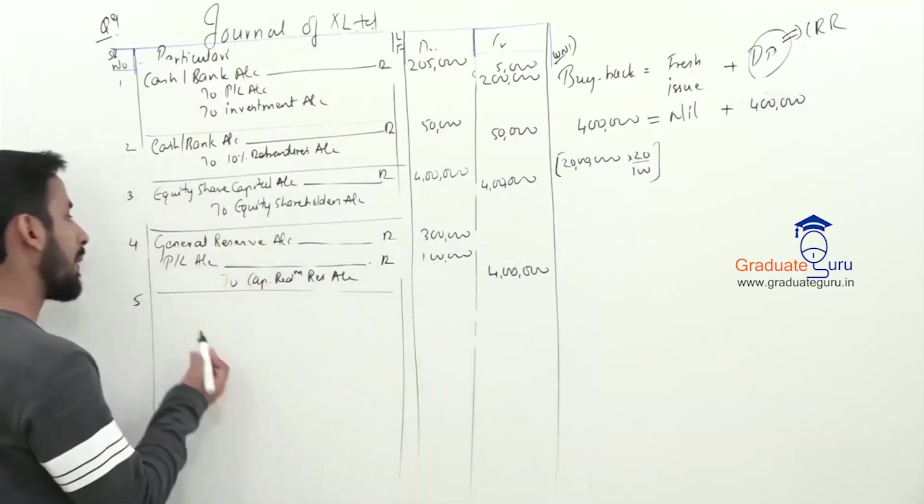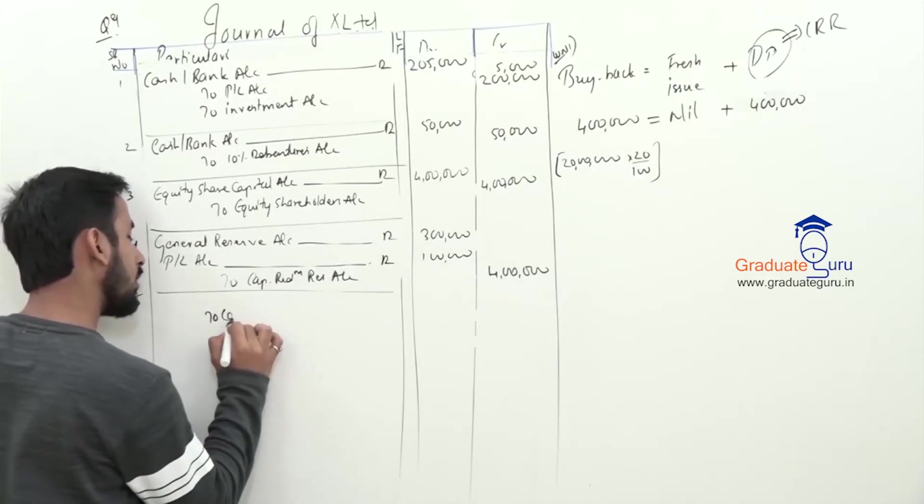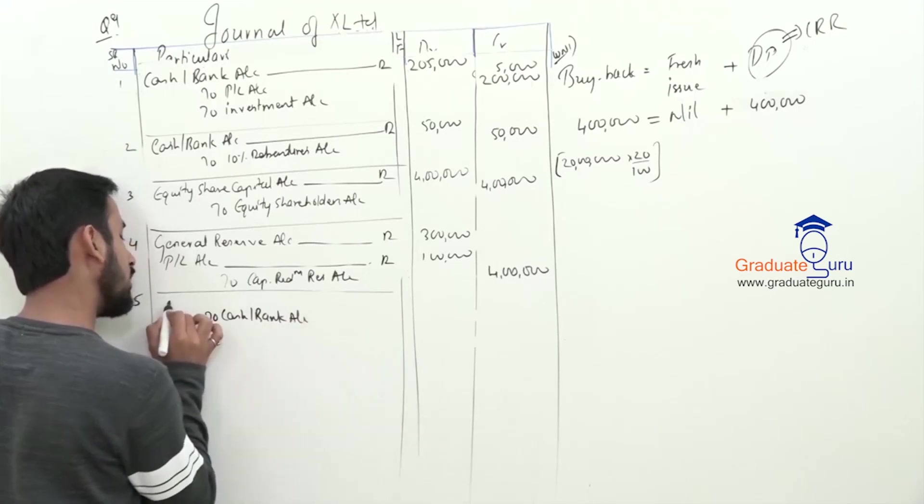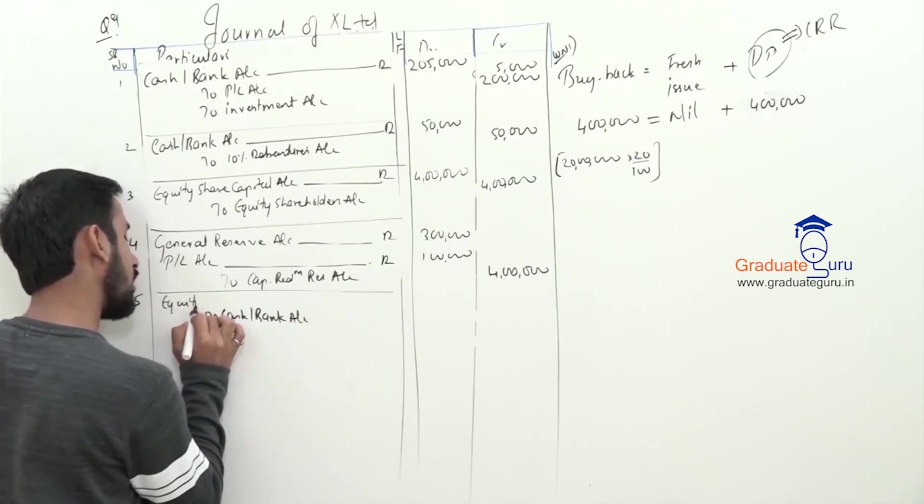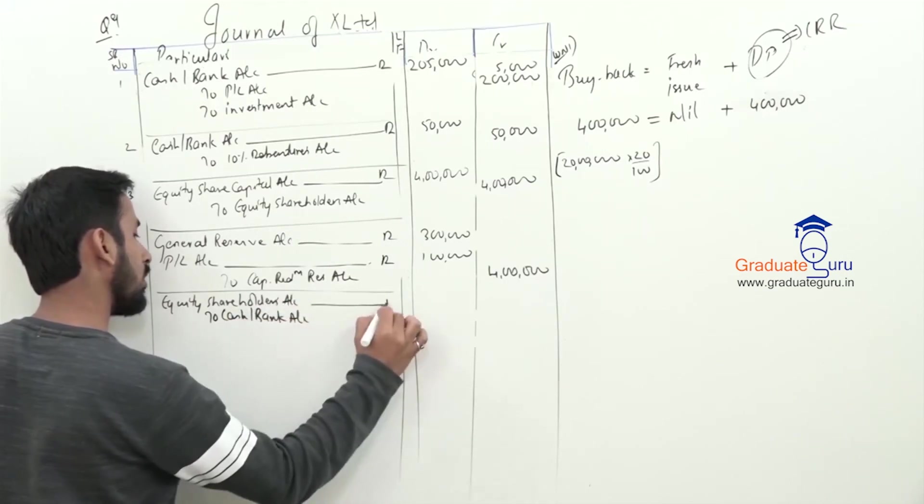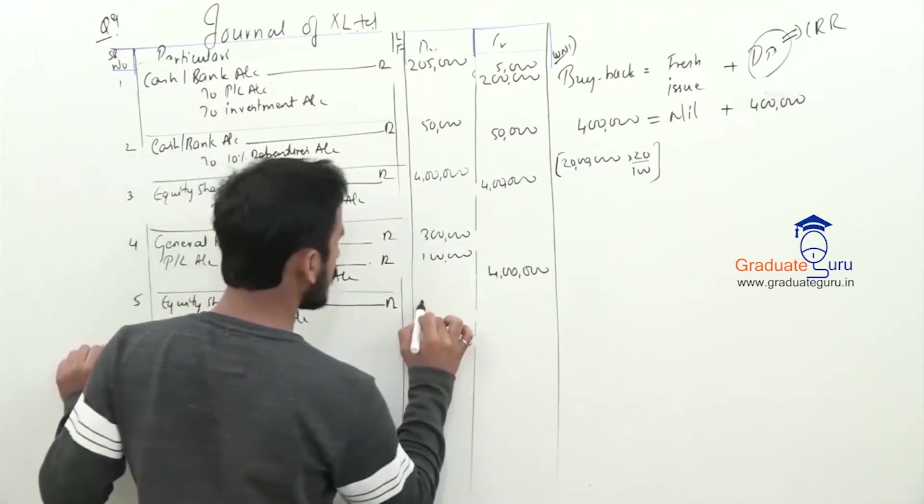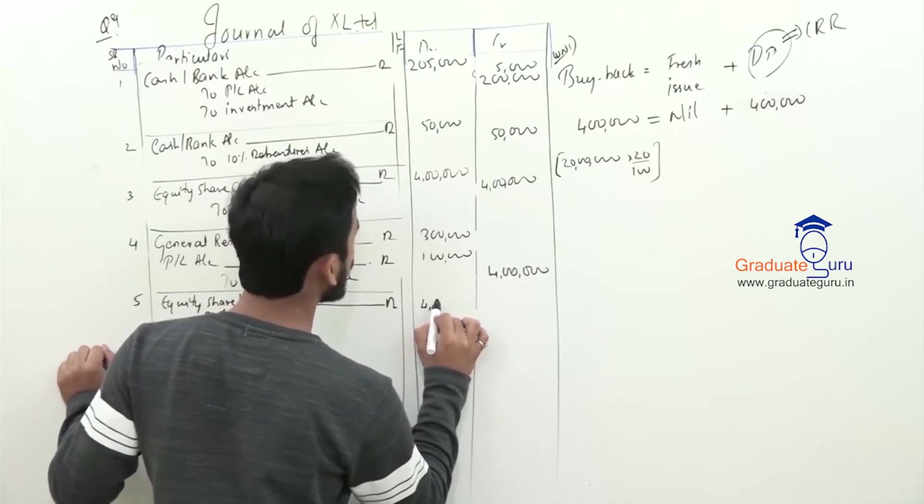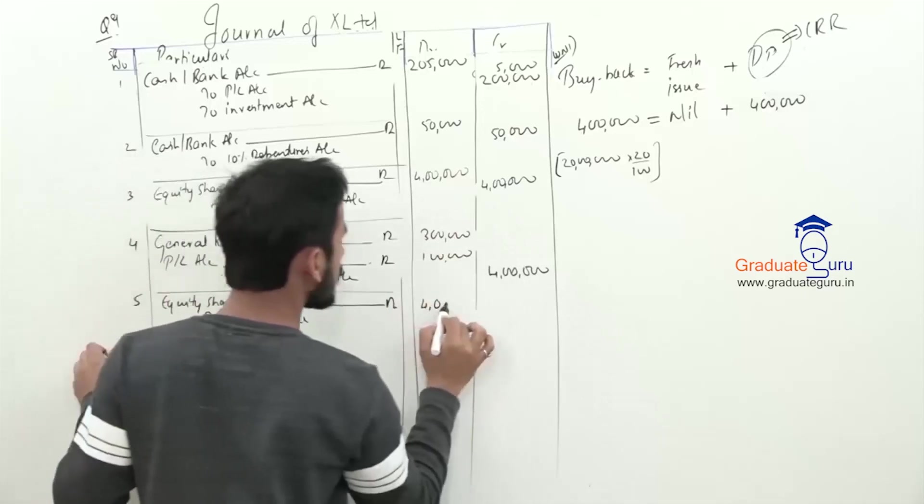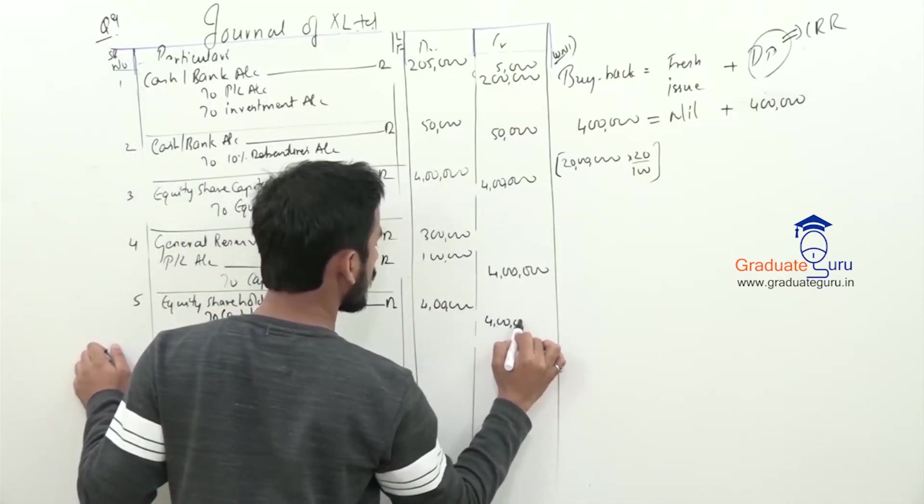So, we will pay it off. Money is going from our side to cash and bank. And, the other receiver. So, how much? 4,00,000.